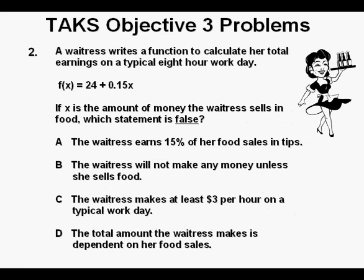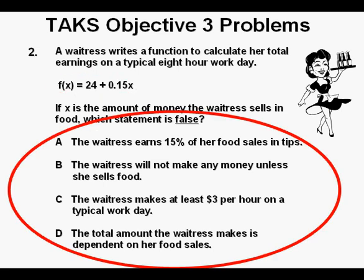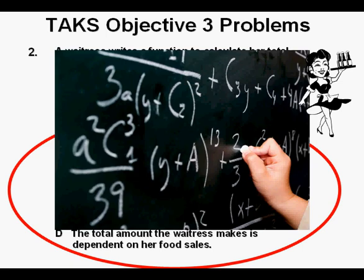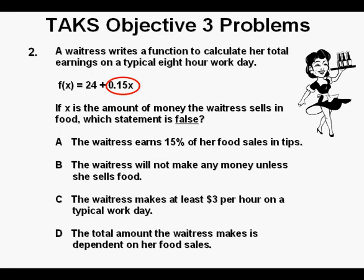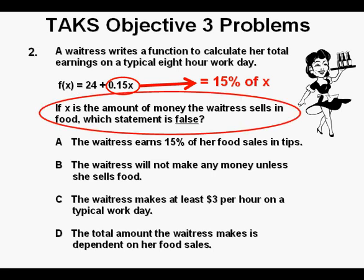Problem 2. A waitress writes a function to calculate her total earnings on a typical 8-hour workday. The equation given is f(x) = 24 + 0.15x. If x is the amount of money the waitress sells in food, which statement is FALSE? Here is a function given to calculate the total earnings for an 8-hour day of a waitress. We need to determine which of these four statements is FALSE. We evaluate each statement and do some mental mathematics to determine which statement is FALSE. The function says $24 plus 0.15x, which is 15% of x or times x, and x represents the amount of sales in food.